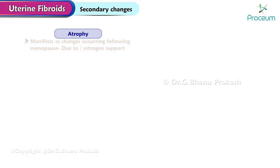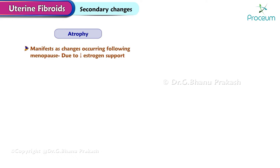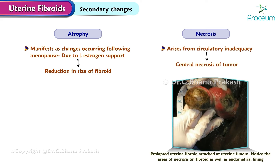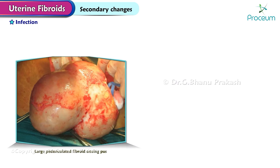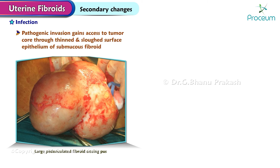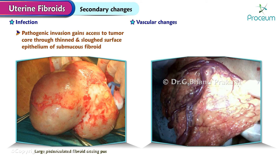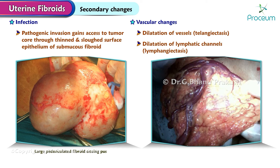Atrophy manifests as changes occurring following menopause due to diminished estrogen support, resulting in a reduction in the size of the fibroid. Necrosis arises from circulatory inadequacy, leading to central necrosis of the tumor. In the case of infection, pathogenic invasion gains access to the tumor core through the thinned and soft surface epithelium of the submucous fibroid. Vascular changes introduce variations like dilatation of the vessels (telangiectasis) or dilatation of the lymphatic channels (lymphangiectasis) within the myoma. The specific cause of these changes remains unknown.